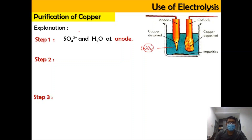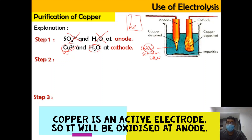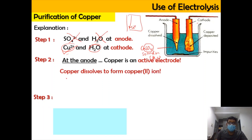SO₄²⁻ will be attracted to the anode, as well as water, since it is copper sulfate solution — so there is H₂O here. At the cathode, which is the negative electrode, Cu²⁺ and water will be attracted. Logically, Cu²⁺ will be selected because it is lower in the electrochemical series — it has a more positive SRP value — and hence it will be selected for discharge. However, at the anode, both sulfate and water will not be selected. Instead, the copper electrode itself will be involved in the redox reaction because copper is an active electrode. So copper will dissolve to form Cu²⁺ ions: copper solid becomes Cu²⁺ aqueous, releasing 2 moles of electrons.